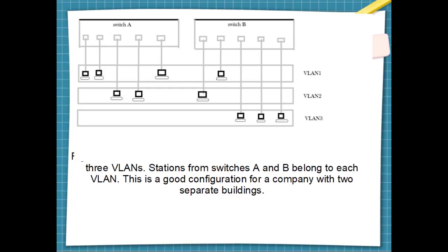The medium between the two switches is the backbone switch. People in the first building and people in the second building can be in the same workgroup, even though they are connected to different physical LANs. When both buildings or companies want to communicate with each other and work on the same project, they have to develop a VLAN connection between themselves.